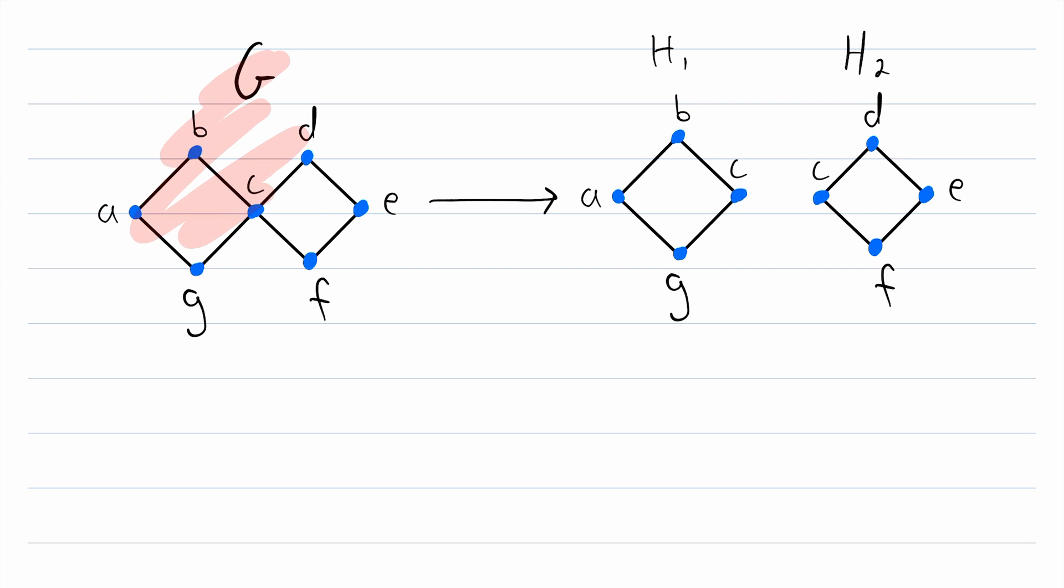So now we have decomposed the graph G into this subgraph and this subgraph. They both happen to be four cycles. Now is this a valid decomposition of the graph G?